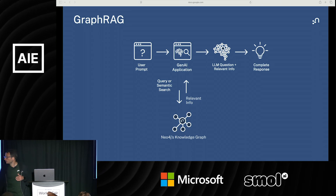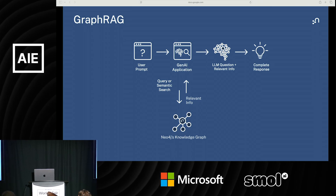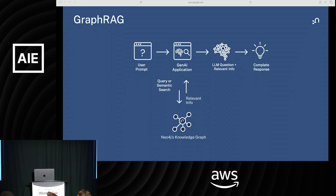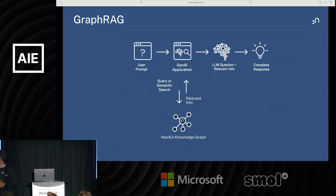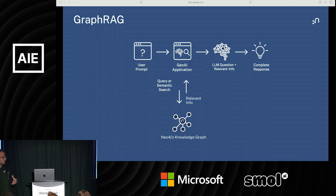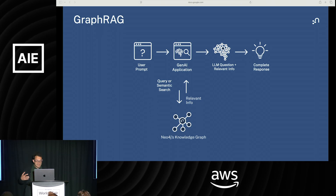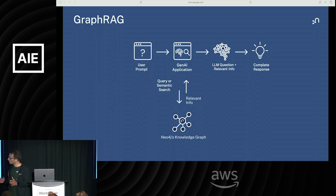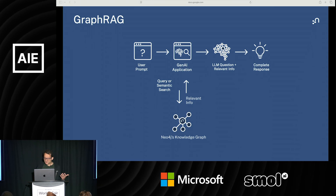The interesting thing is that by using a knowledge graph, you get a much richer collection of retrieval strategies. You have not only vector semantic search over the vector index, you can also contextualize results because a graph captures the connections between data points, and you can generate structured queries. This rich collection of retrieval strategies augments what you have when you restrict yourself to only vector search, resulting in better quality results: more completeness, more relevance, better precision, and more faithfulness.